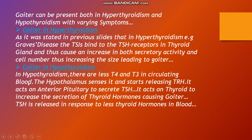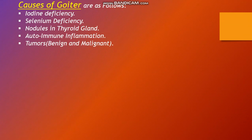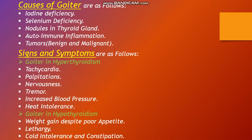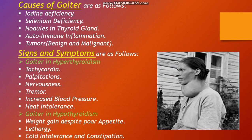In hypothyroidism, there are less T3 and T4 in the circulating blood. The hypothalamus senses this and releases TRH, which acts on the pituitary to create TSH, stimulating the thyroid to increase secretion of thyroid hormone, causing goiter. TSH is released in response to low thyroid hormones. Causes of goiter include iodine deficiency, selenium deficiency, thyroid nodules, autoimmune inflammation, and benign or malignant tumors. Symptoms of goiter in hyperthyroidism include tachycardia, palpitation, nervousness, tremor, and increased blood pressure. In hypothyroidism: weight gain despite poor appetite, lethargy, cold intolerance, and constipation.